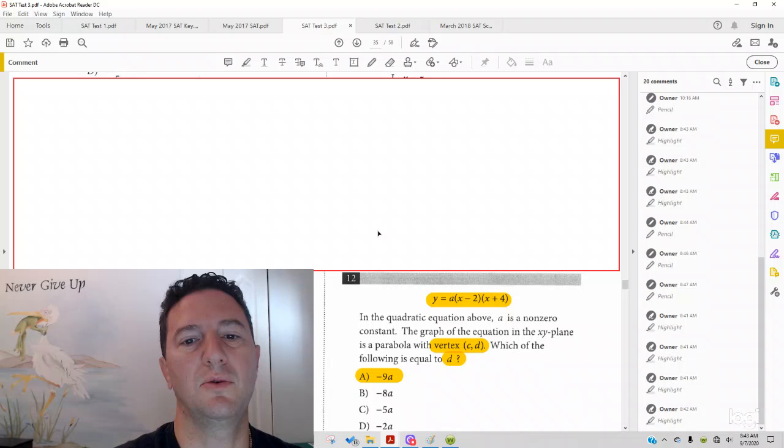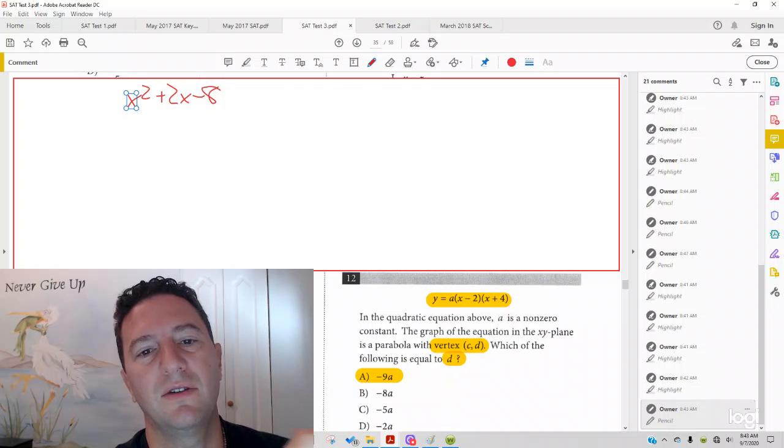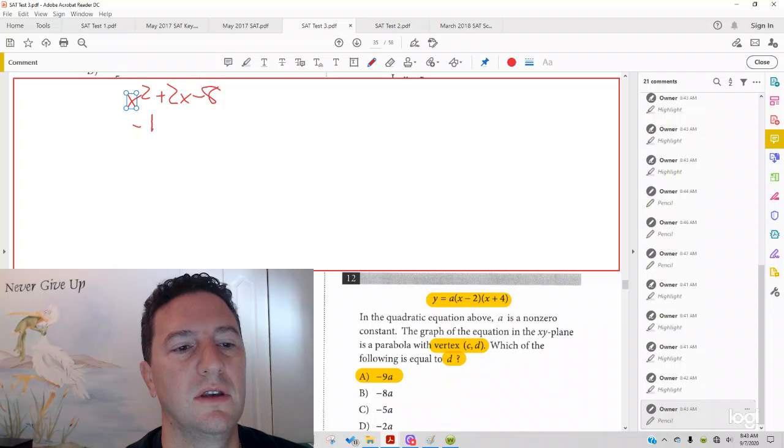Now, let's say you were given the form x squared plus 2x minus 8. In that case, and this is how you usually do it in math class, you do negative b over 2a. So what's your b?